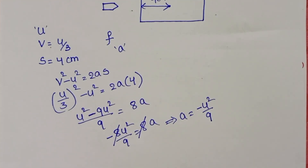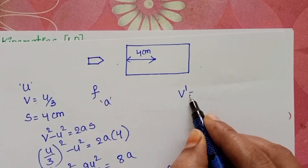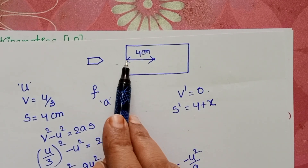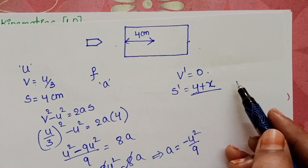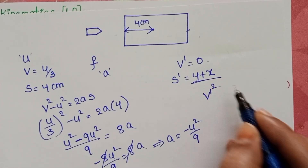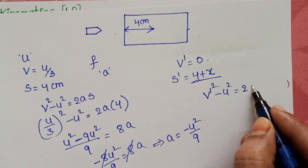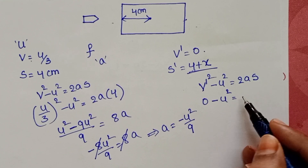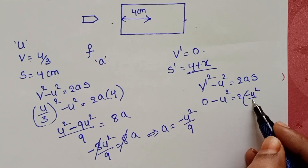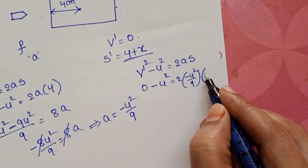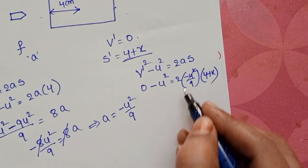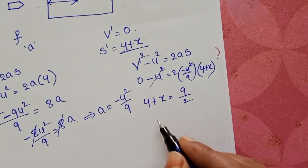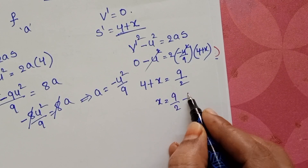Finally, the bullet comes to rest after travelling a total distance of (4 + X) from the starting position. Taking the equations of motion again: V² - U² = 2A × distance. With final velocity 0, initial velocity U, acceleration -U²/9, and total distance (4 + X), the -U² terms cancel on both sides, giving (4 + X) = 9/2. Therefore, X equals 9/2 minus 4.